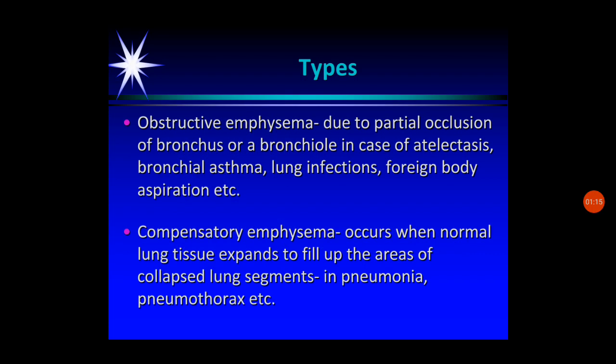The first is obstructive emphysema. Due to partial occlusion of a bronchus or bronchiole — in cases of atelectasis, bronchial asthma, lung infarctions, foreign body aspiration, etc. — air is trapped in the alveolus and it becomes distended beyond a particular limit, eventually rupturing, leading to obstructive emphysema.